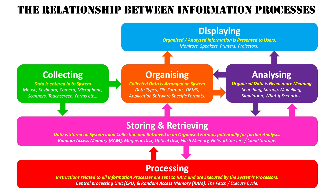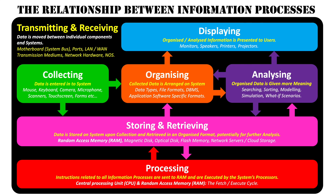The last information process is transmitting or receiving. All the information processes relate to each other, and one way this happens within a single system is through the motherboard and system bus — data is transmitted through different parts of the system, allowing different information processes to execute. External components can also connect through system ports. For systems with multiple devices or terminals, they can be set up in a LAN or WAN format, connected through transmission mediums such as optical fiber or wireless radio technology, using routers and network operating systems.